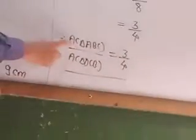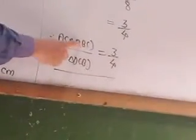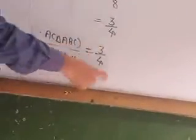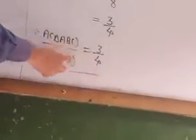Therefore area of triangle ABC upon area of triangle DCB equals 3 upon 4.